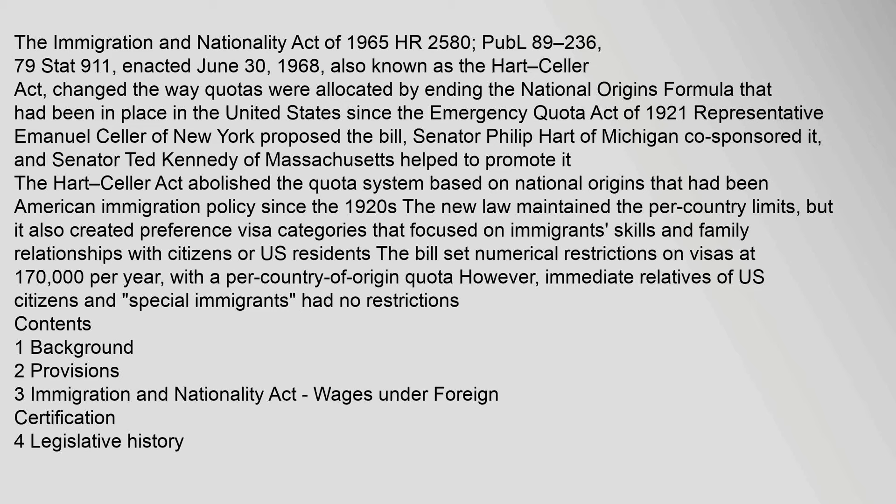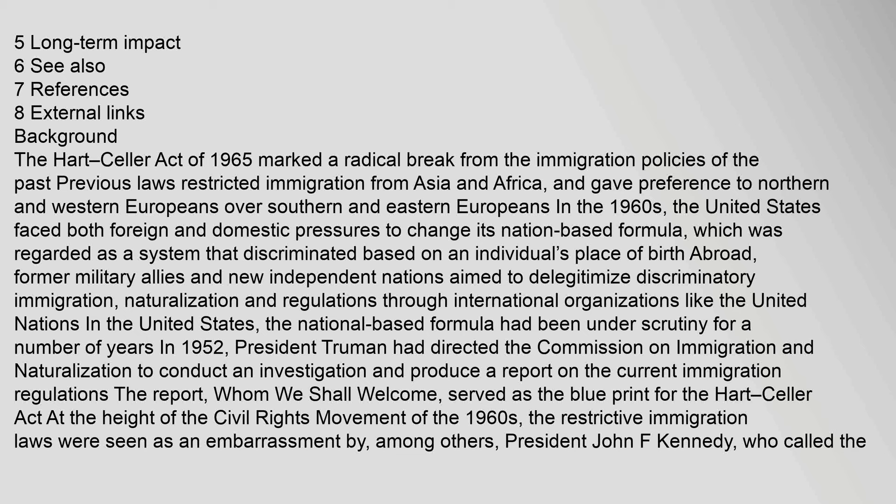The Hart-Celler Act of 1965 marked a radical break from the immigration policies of the past. Previous laws restricted immigration from Asia and Africa, and gave preference to Northern and Western Europeans over Southern and Eastern Europeans. In the 1960s, the United States faced both foreign and domestic pressures to change its nation-based formula, which was regarded as a system that discriminated based on an individual's place of birth abroad. Former military allies and new independent nations aimed to delegitimize discriminatory immigration and naturalization regulations through international organizations like the United Nations.